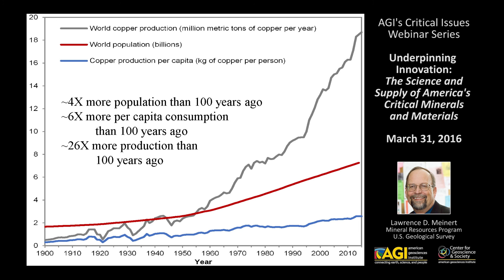We've also got an increase in per capita consumption — each individual is consuming more material, largely due to rising standards of living and the reduction of poverty on a worldwide scale. When you put together the increase in per capita consumption and the increase in world population, you get more than a 25-times increase in production of mineral resources. This particular graph is for copper, but it could apply to almost any element in the periodic table.